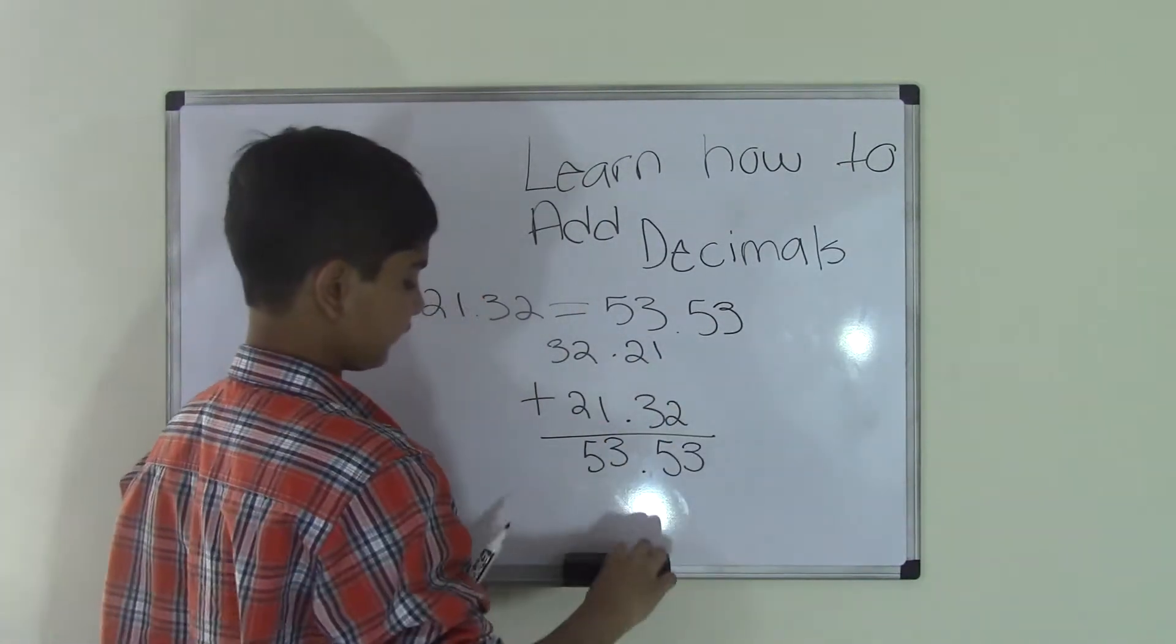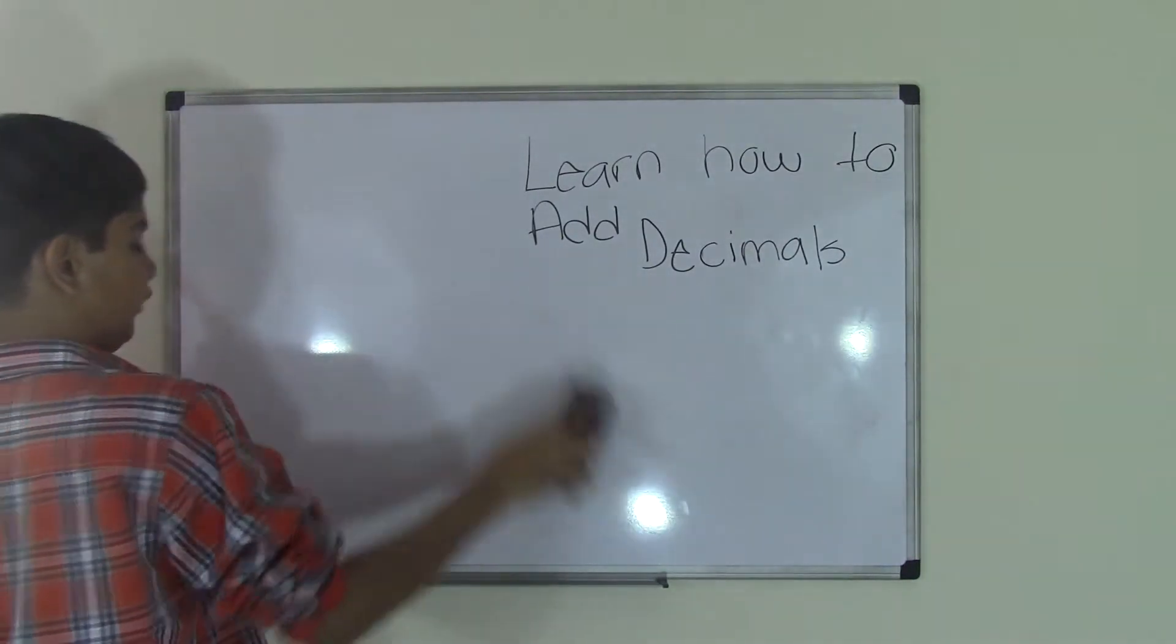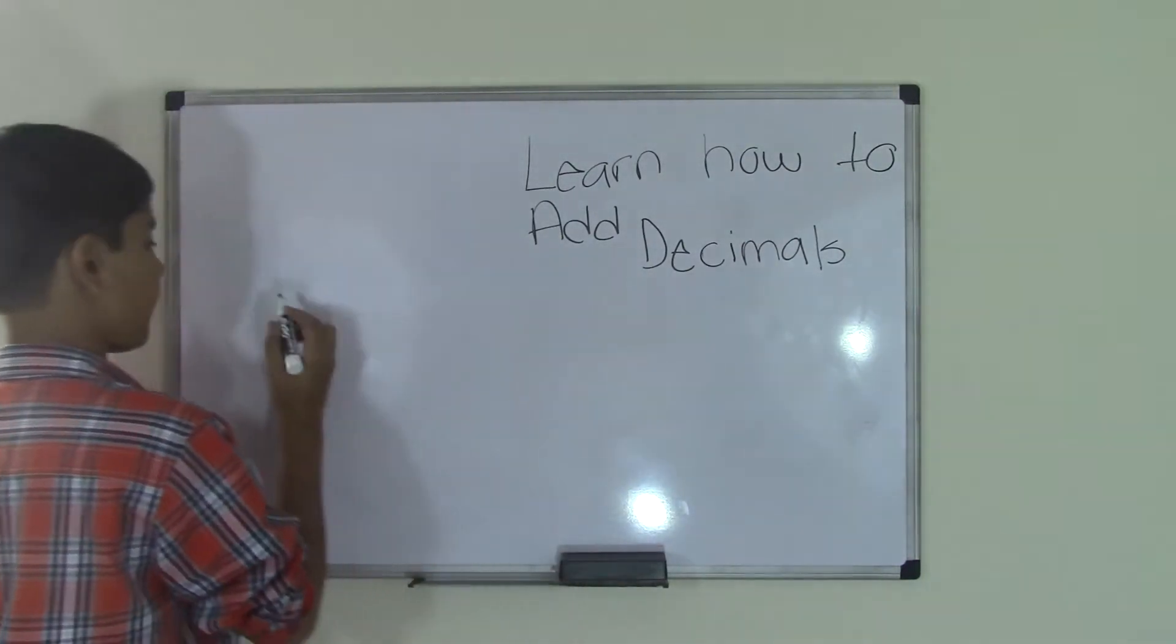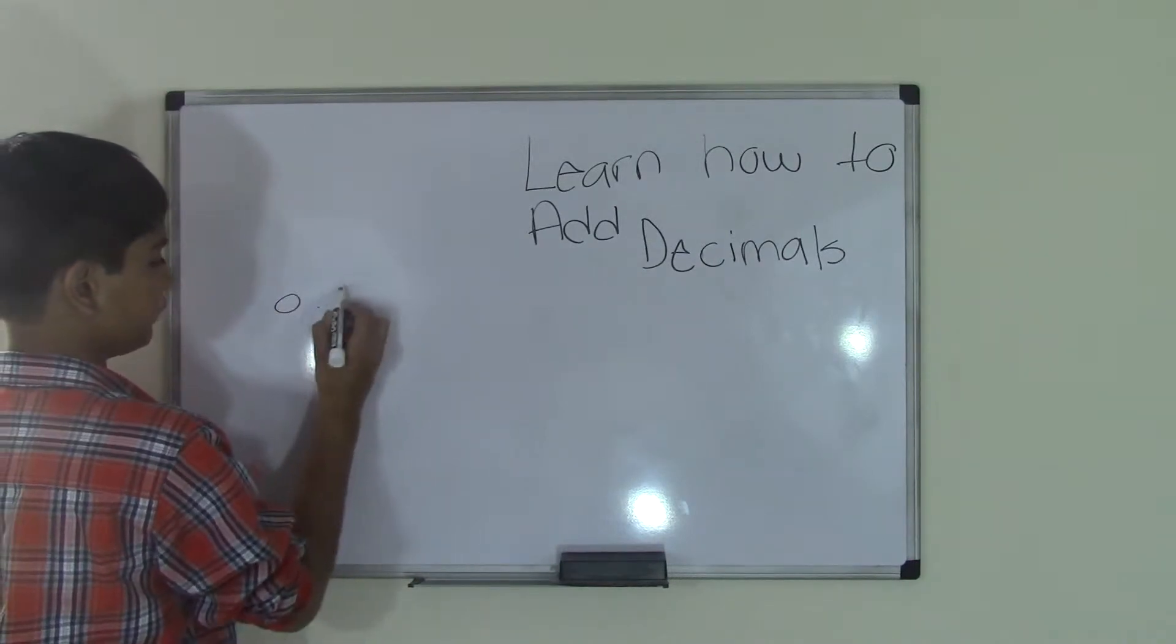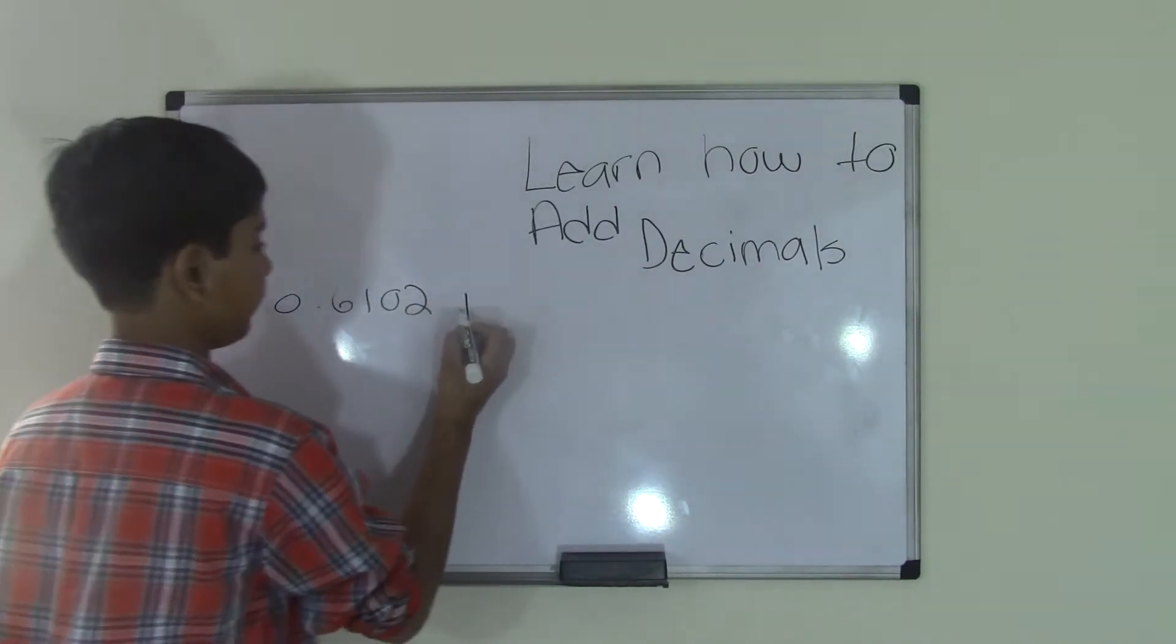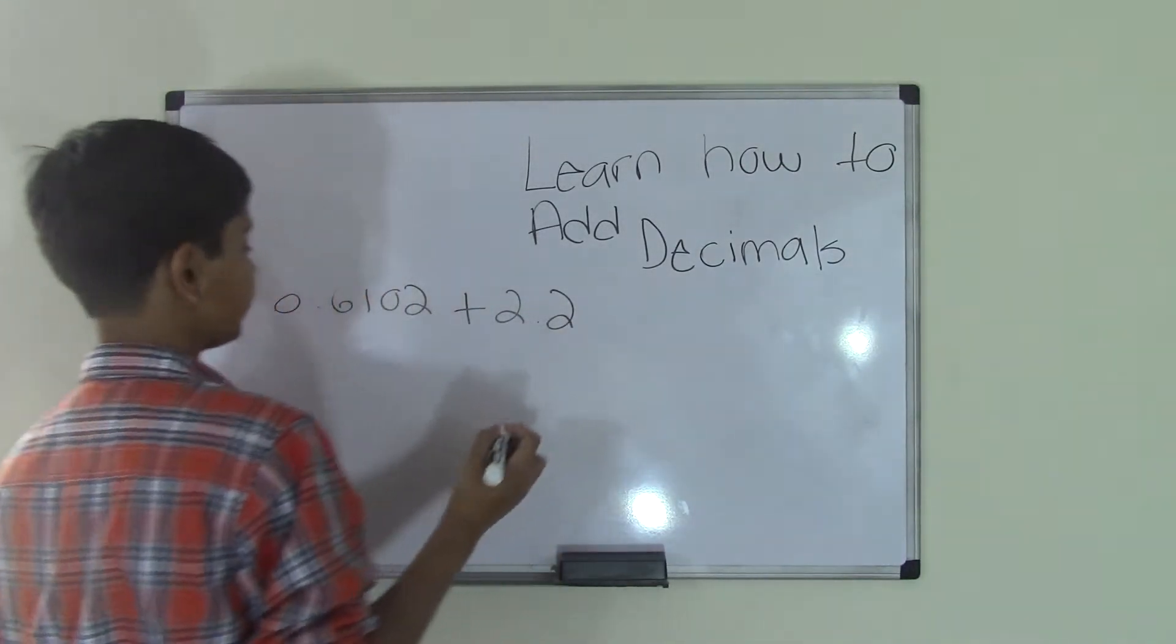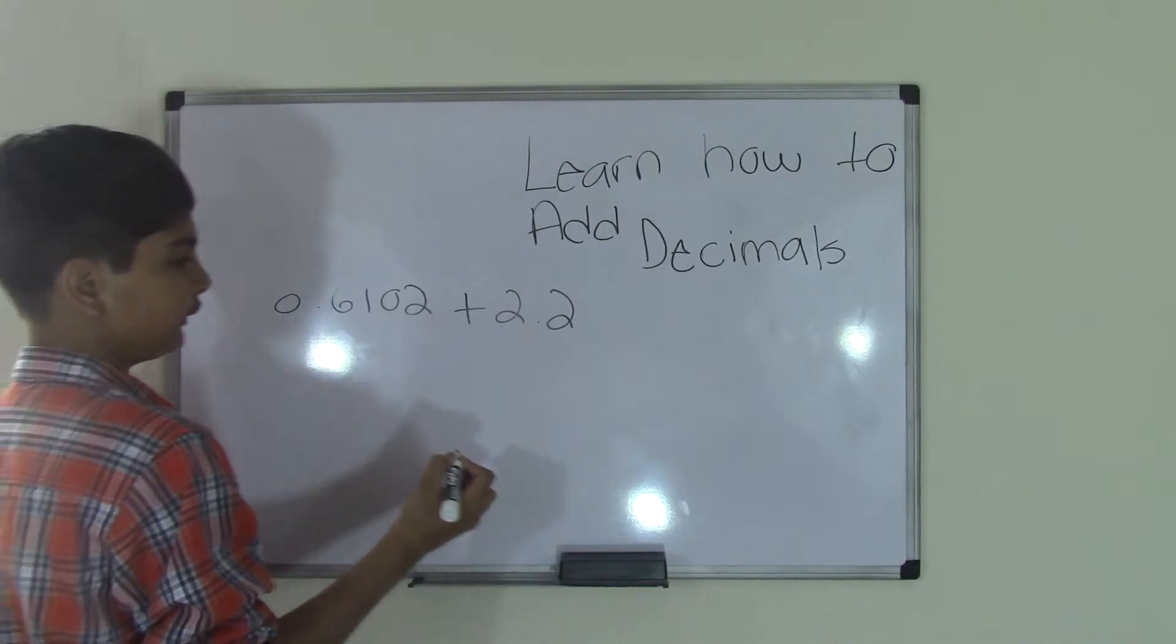Now let's go over another example. For example, if we have 0.6102 plus 2.2. And to do this, remember, always align your decimal points.